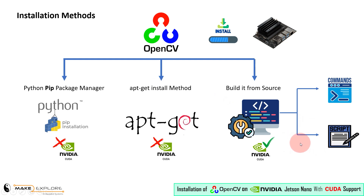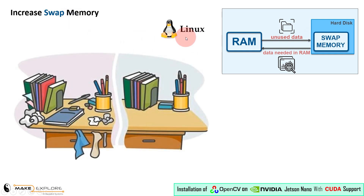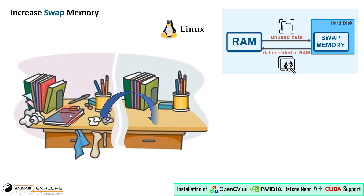But before that, we have to resize and enlarge the memory swap — we have to increase the swap memory of Jetson Nano. So what is swap memory? In Linux, swap memory is like a safety net for your computer's RAM. Think of RAM like a desk where you work on tasks. When the desk is full, you need a temporary place to put your extra papers. That's swap memory.